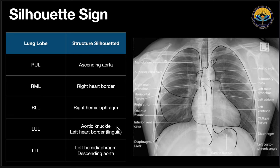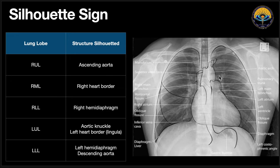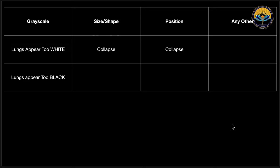Now the silhouette sign: if a structure is just adjacent to something, it will cause silhouetting of the lung. If a lesion is in the right upper lobe, it will silhouette the ascending aorta. If it's in the right middle lobe, it will silhouette the right heart border. If it's in the right lower lobe, it will silhouette the right hemidiaphragm. If it's in the left upper lobe, it will silhouette the left aortic knuckle, and if in the left lower lobe, it will silhouette the left hemidiaphragm.